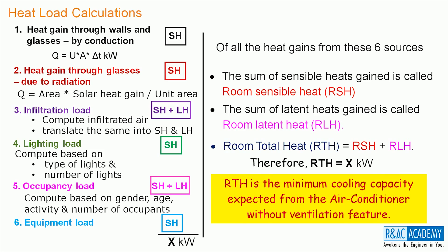Hence, the criteria to select an air conditioner for a room, either window unit or split unit, is that it must have a minimum cooling capacity of RTH for that room. Please note that the window unit and split unit do not have the feature of accommodating ventilation for the room.